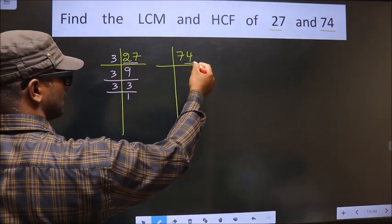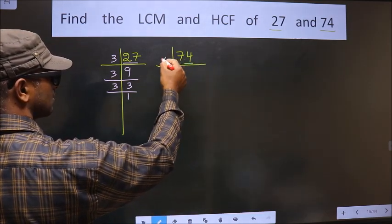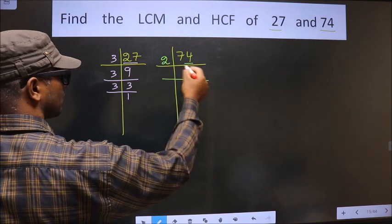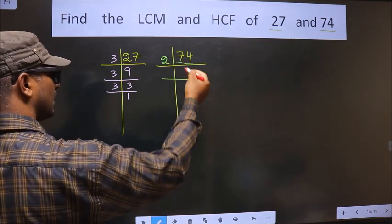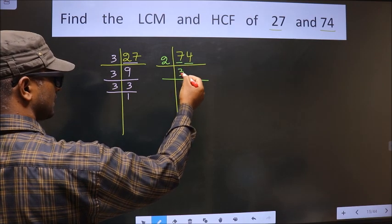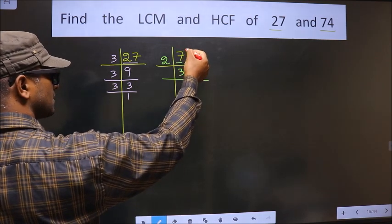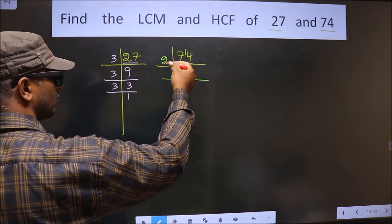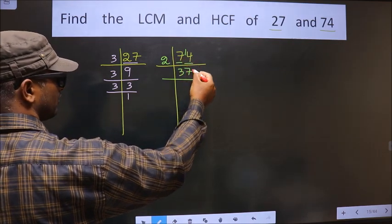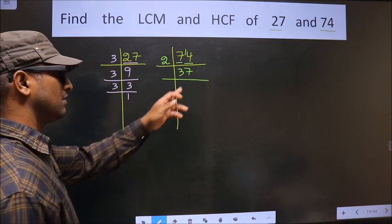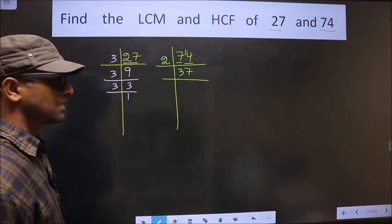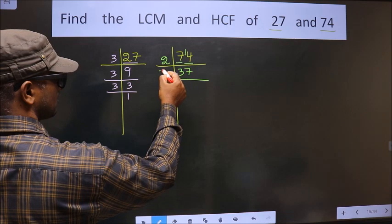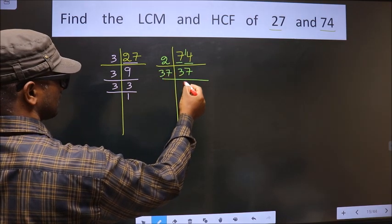For 74, the last digit is 4 which is even, so we take 2. The first number is 7. A number close to 7 in the 2 table is 6. 7 minus 6 is 1, carried forward making it 14. 2 times 7 is 14. Now we have 37. 37 is a prime number, so we take 37 once.